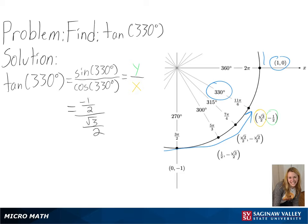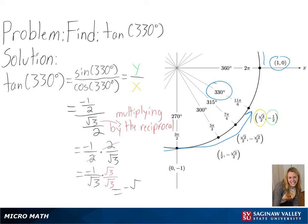So we will get negative half over the square root of 3 over 2, and then multiplying by the reciprocal and simplifying, we will get negative square root of 3 over 3 as our final answer.